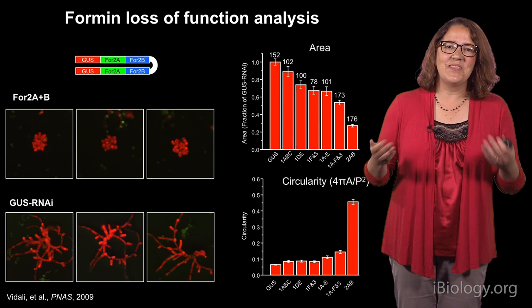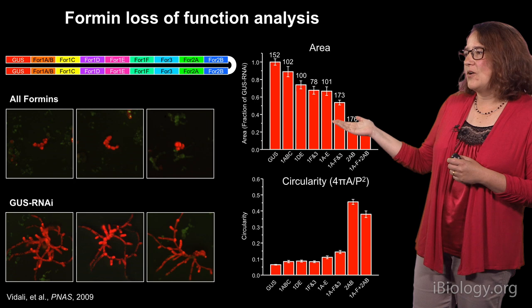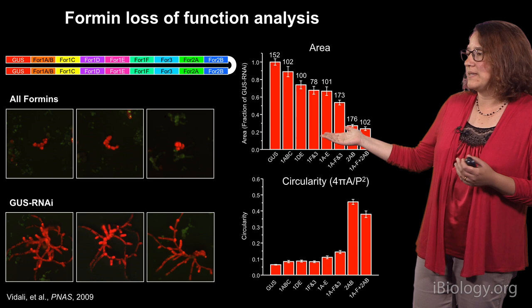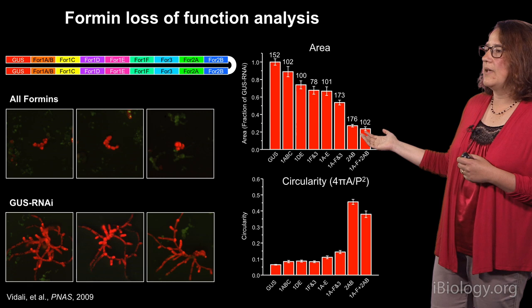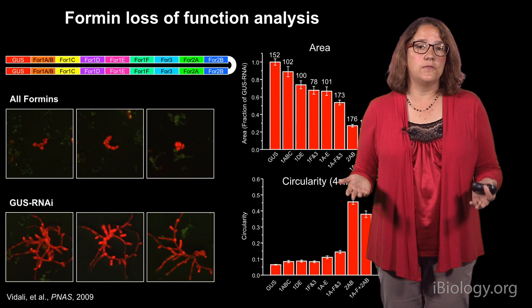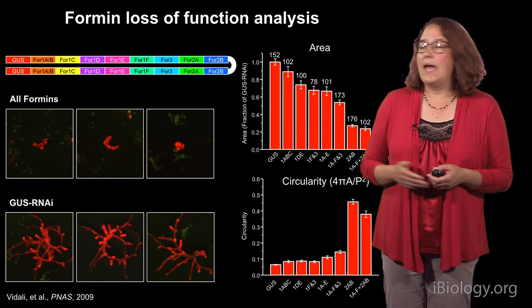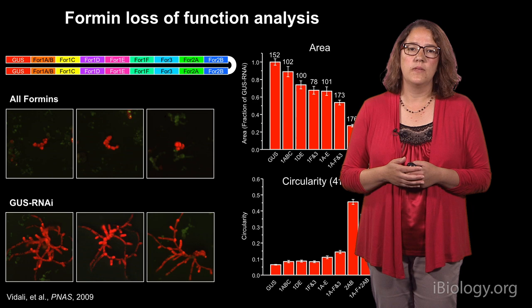We had all the pieces of DNA and thought, why not string them all together? So we made a construct that silences all the formins. We got very sad-looking plants — they don't live very long, they make only three or four cells, and the cells are enormous compared to normal cells. If you look at them at 9 or 10 days after transformation, they're pretty much gone from the plate. So that tells us that formins are essential for viability. This phenotype is not the same as silencing just the class 2 formins, confirming that class 1 and class 2 formins have different roles.